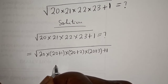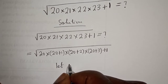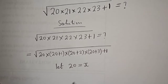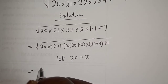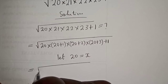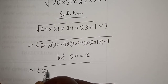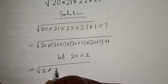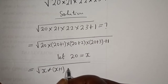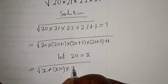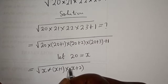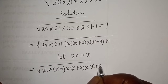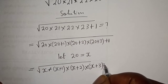Now from here, let 20 be equal to S. This is equal to the square root of S multiplied by S plus 1, multiplied by S plus 2, multiplied by S plus 3, plus 1.